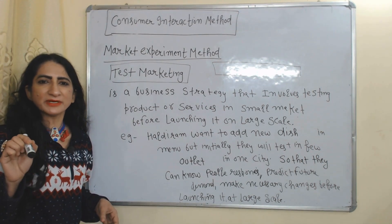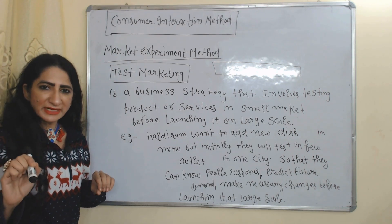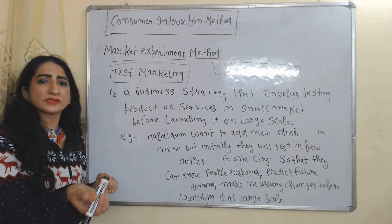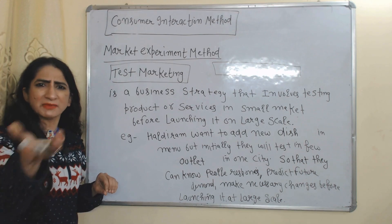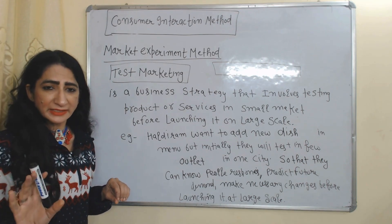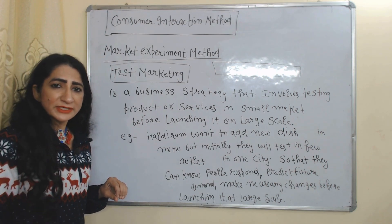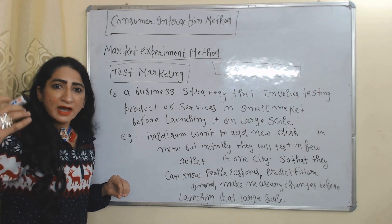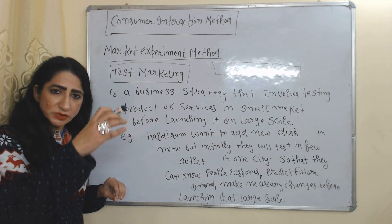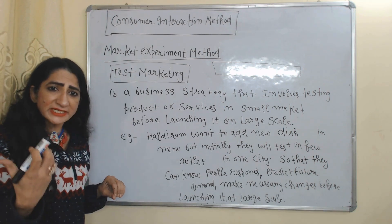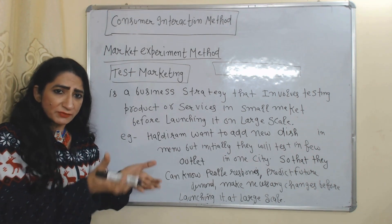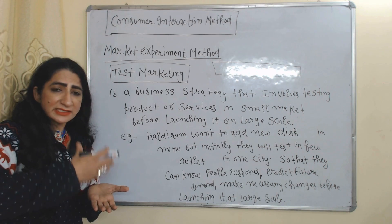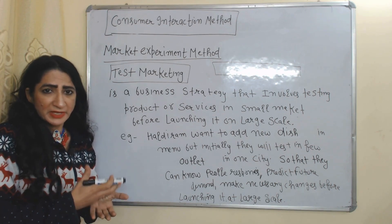The next consumer interaction method is market experiment. Under market experiment, businesses conduct tests and experiments in the market to know consumer response and predict demand accordingly. For example, under test marketing, we test our product in a small market before launching it at large scale, so that we can know consumer response, predict demand, and make necessary changes before the full launch.